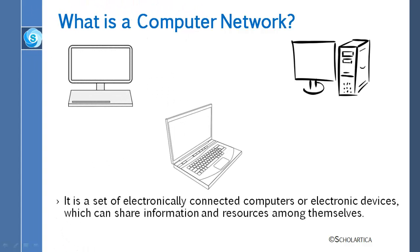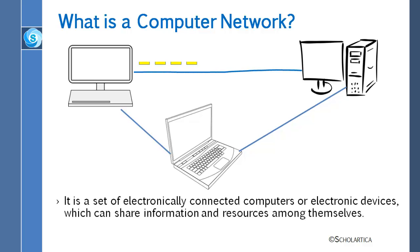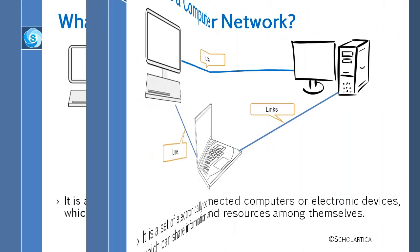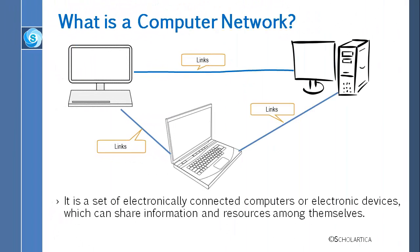So, what is a computer network? A computer network is a very simple concept. It is a set of electronically connected computers or electronic devices which can share information and resources among themselves. There are communication protocols such as TCP and IP that define how this sharing should take place.